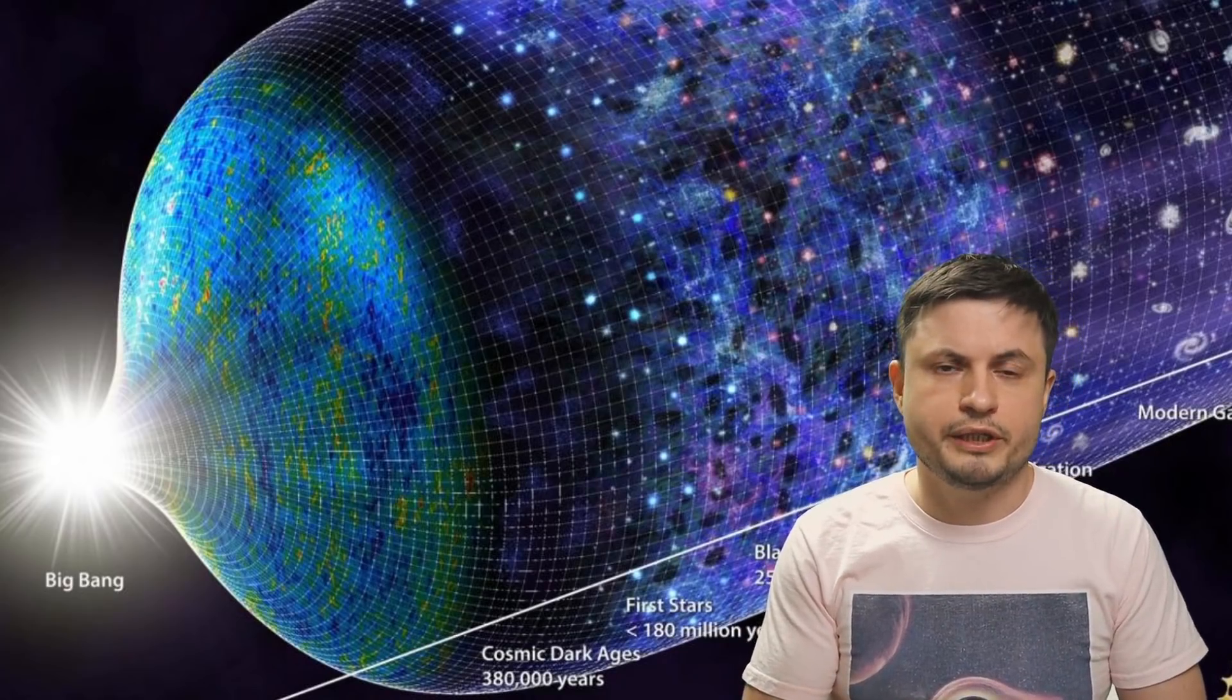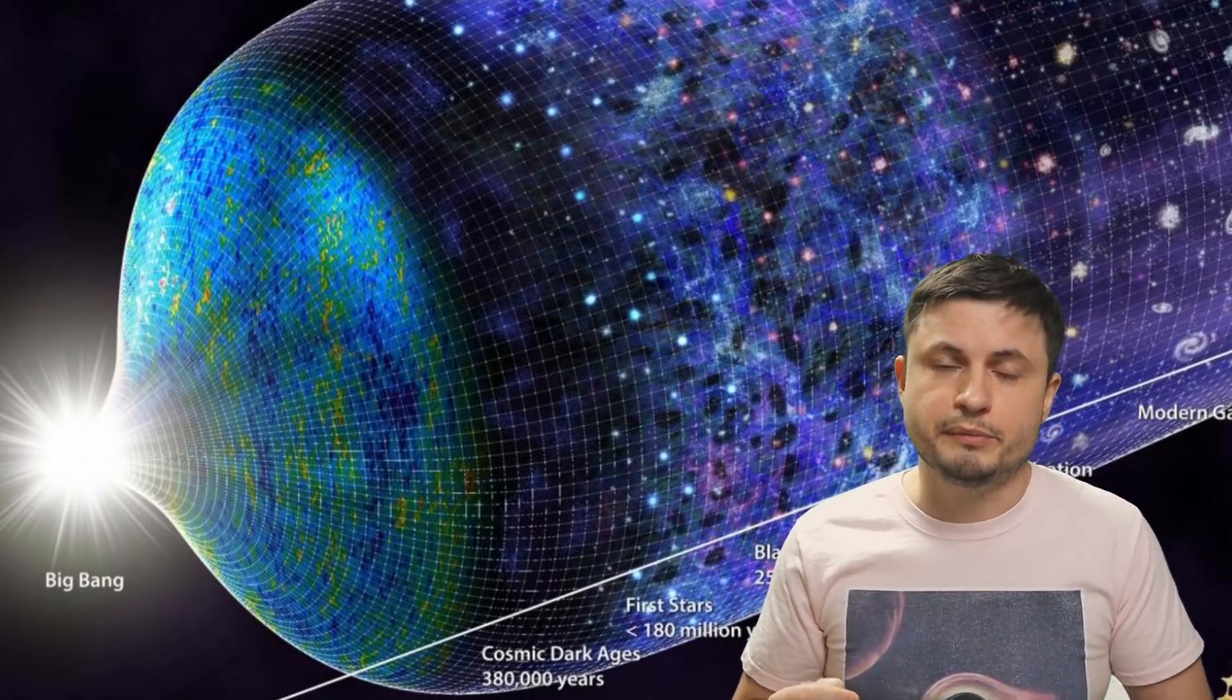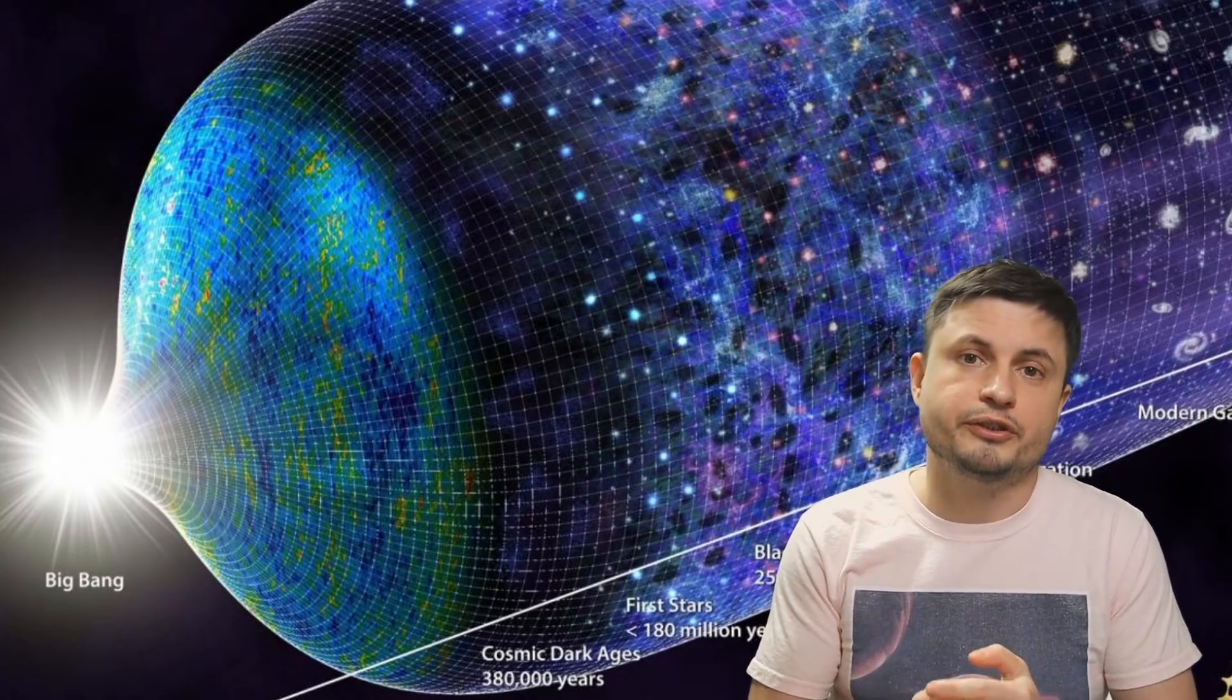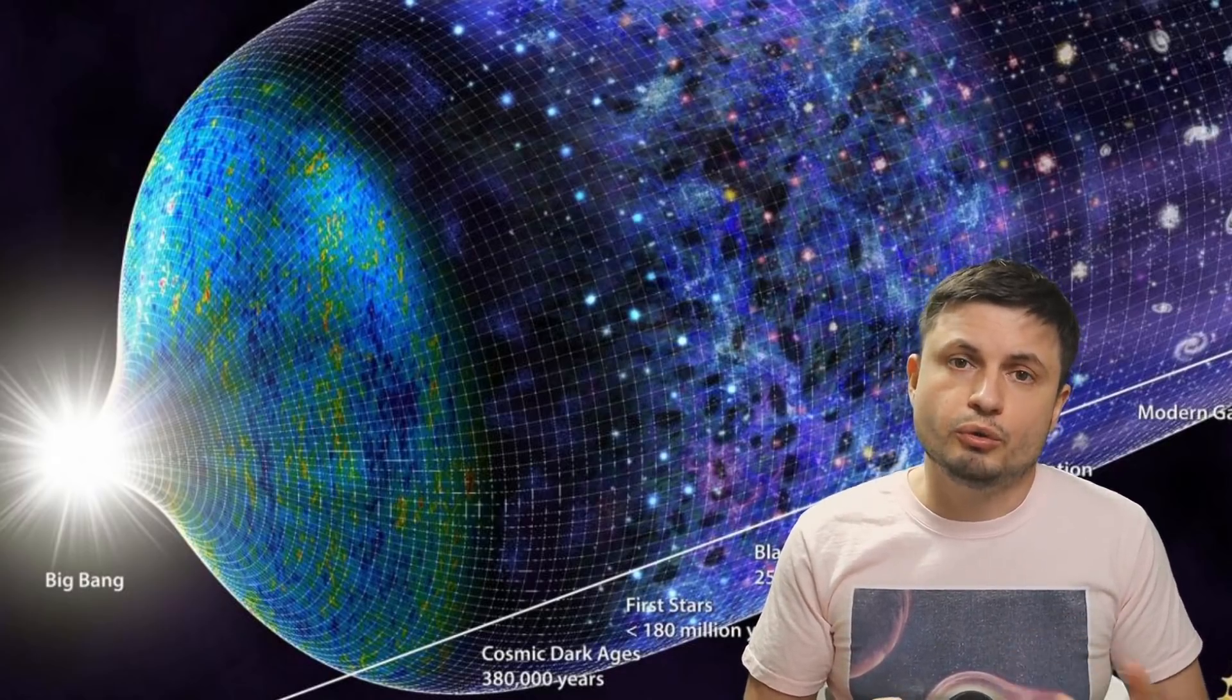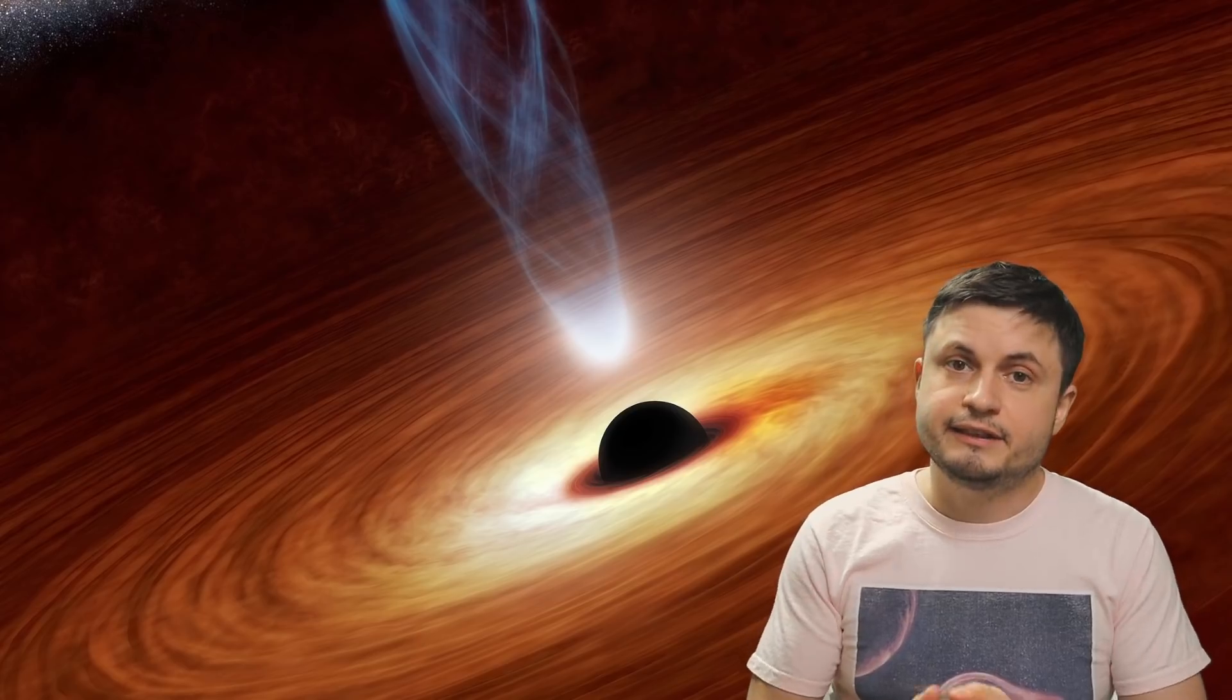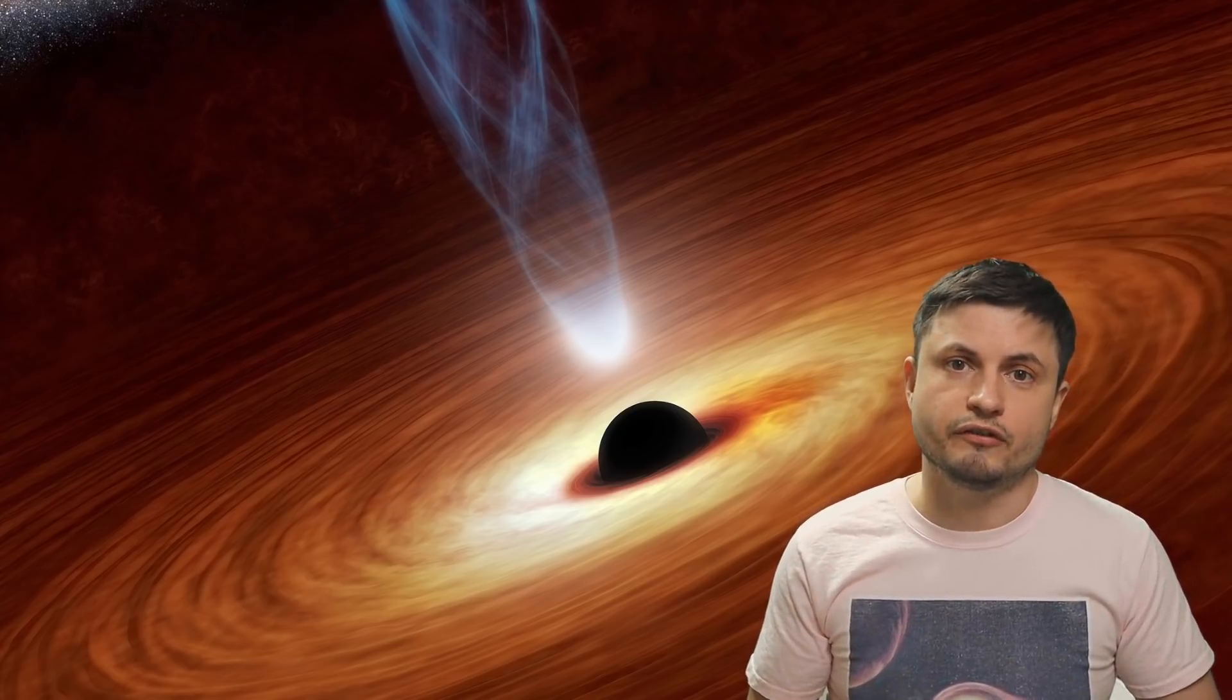But what's interesting about this quasar is that it appeared somewhere in the middle. Basically when the universe was still re-ionizing and when things were not transparent yet, but also when we don't really expect to find these extremely massive black holes. At least if we look at all of the theories of black hole formations.